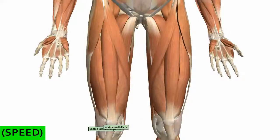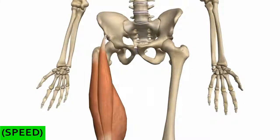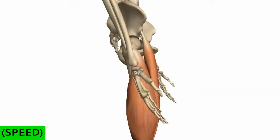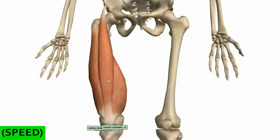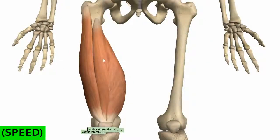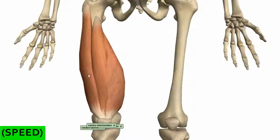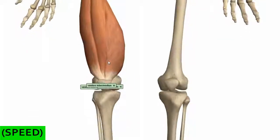Looking at these muscles in isolation — the rectus femoris originates on the anterior inferior iliac spine, and there's also a reflected head inserting superiorly to the acetabular fossa. Its pelvic origin allows it to act as a hip flexor. Removing the rectus femoris, underneath you can see the vastus intermedius, lying between the vastus lateralis and vastus medialis. These muscles originate on the femur and insert via the common quadriceps tendon, acting to extend the leg at the knee joint. The quadriceps are innervated by the femoral nerve.